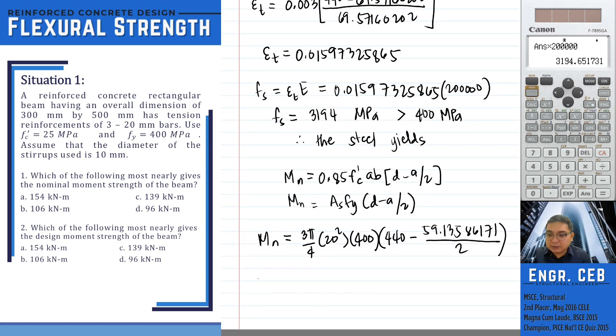So we can now solve for the nominal moment strength and that is 154.7292448 kilonewton meter. And that is letter A.